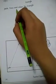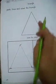Paste, trace, and color the triangle. 1, 2, 3. We have 3 triangles. How many triangles we have? We have 3 triangles.